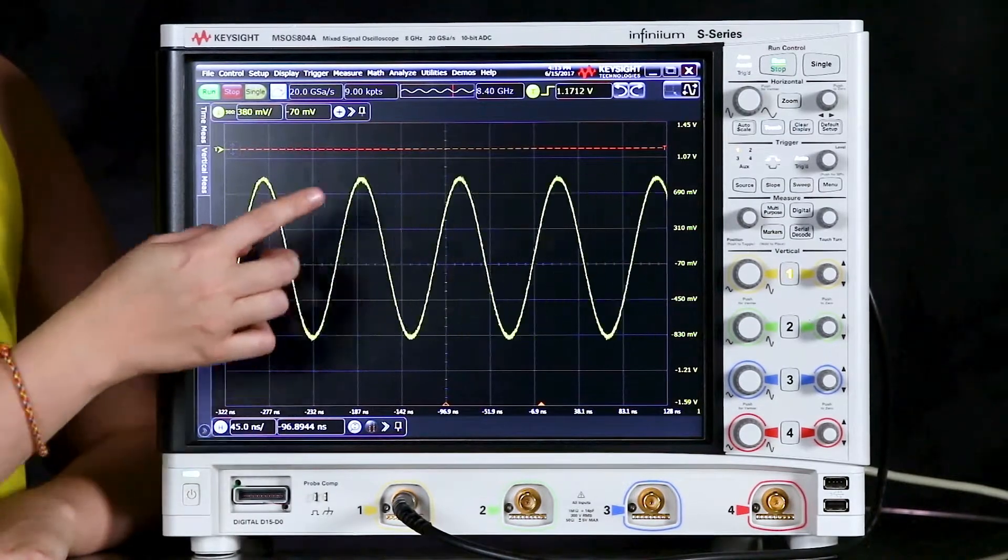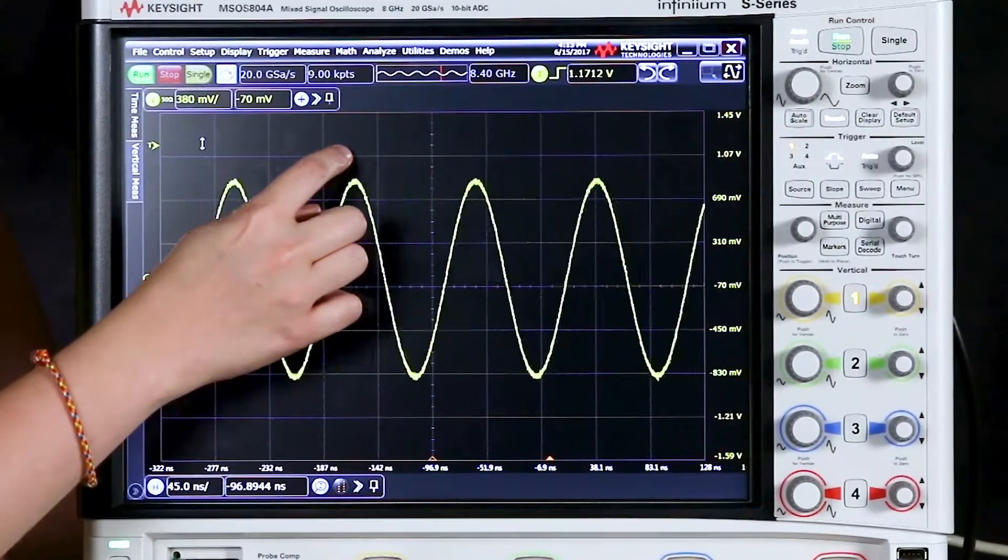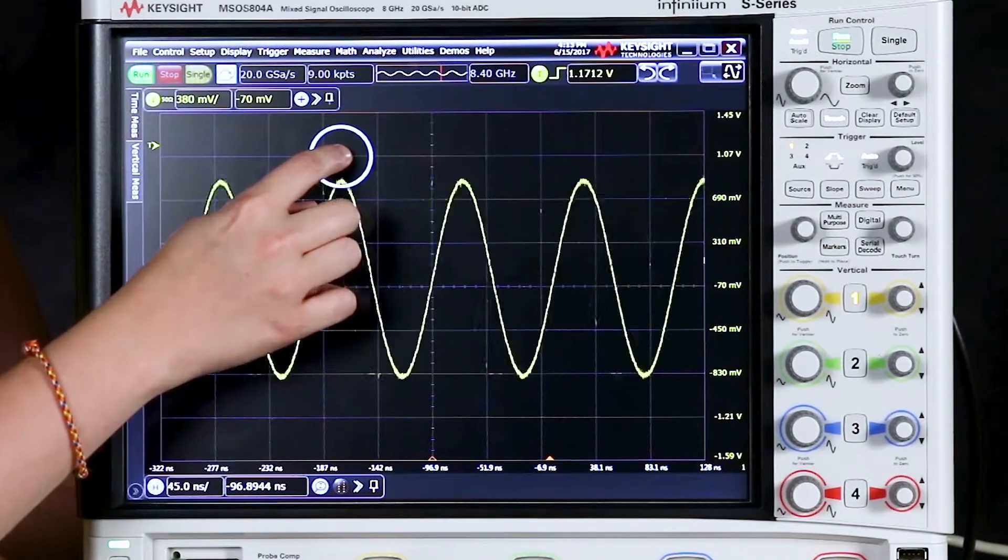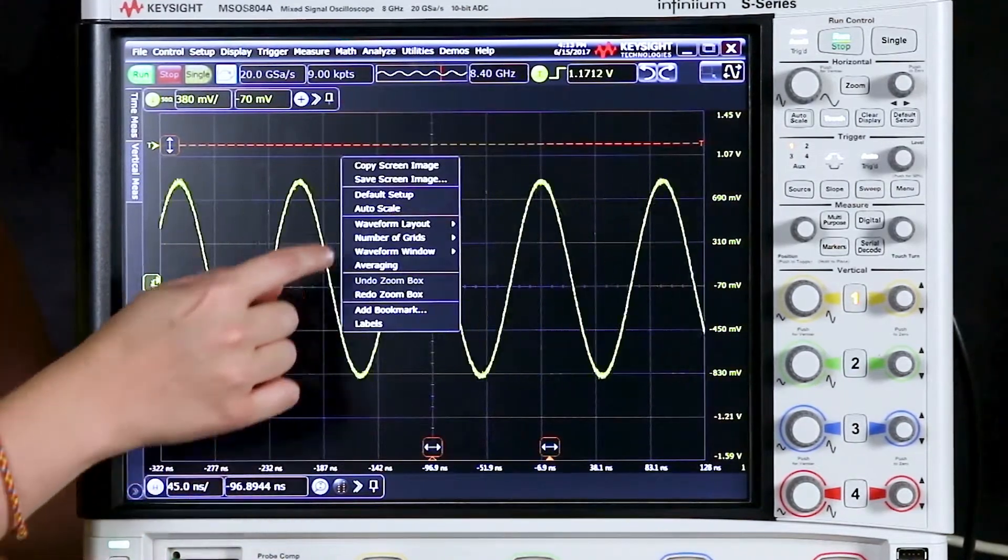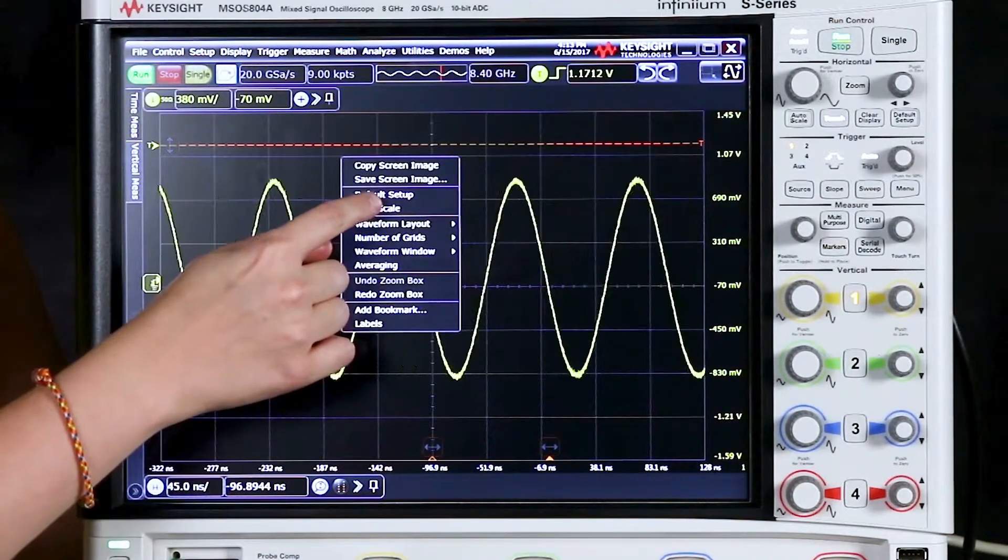...we can either use auto scale on the front panel or we can right click. To right click with touch you just hold your finger down until the circle appears and then we'll choose auto scale from this menu.